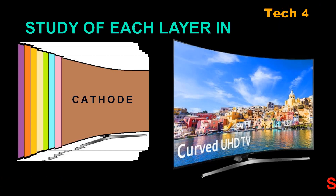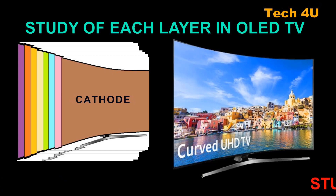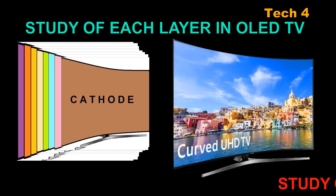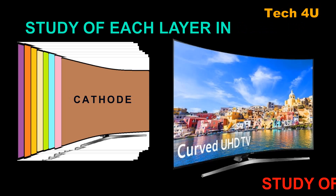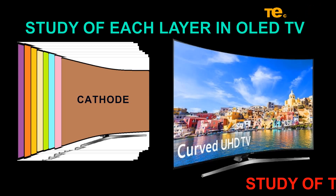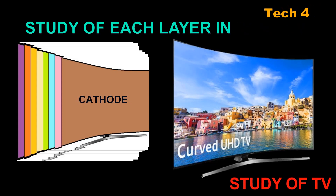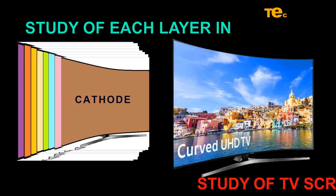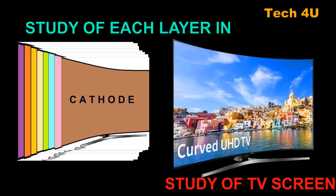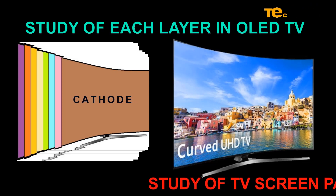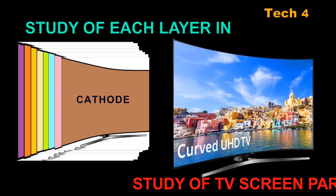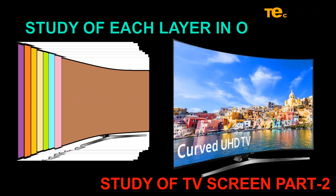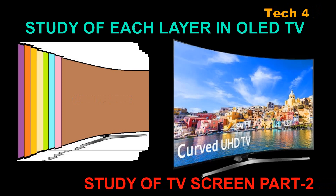The last layer is the cathode, which is negatively charged to inject electrons into the organic layers that make up the OLED device. These are the different layers encapsulated in organic light-emitting diode TV screens.